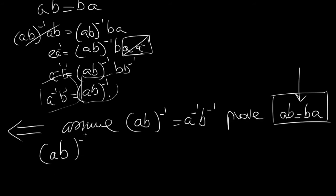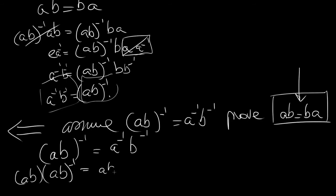We know (AB)⁻¹ equals A⁻¹B⁻¹. The inverse of (AB)⁻¹ is AB, so let's multiply on the left by AB: AB times (AB)⁻¹ equals AB times A⁻¹B⁻¹. It's important to remember that if you operate on the left on one side, you must operate on the left on the other side.